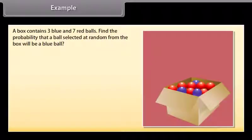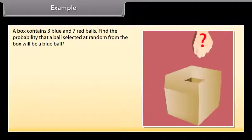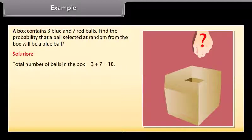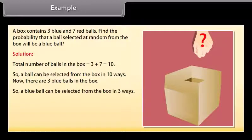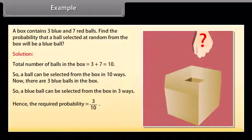A box contains 3 blue and 7 red balls. Find the probability that a ball selected at random from the box will be a blue ball. Solution: Total number of balls = 3 + 7 = 10, so a ball can be selected in 10 ways. There are 3 blue balls, so a blue ball can be selected in 3 ways. Hence, the required probability is 3/10.